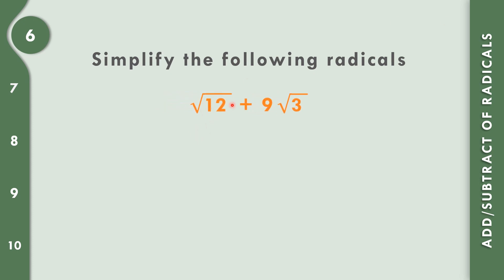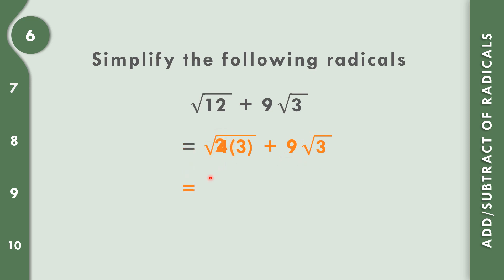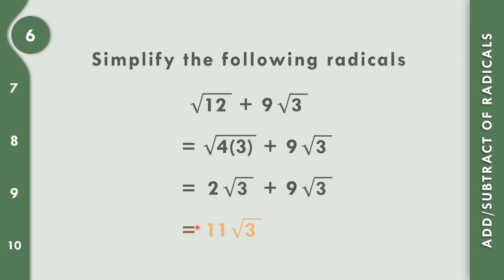In number 6, square root of 12 plus 9 square root of 3. The index is the same, but the radical is not. We need to simplify 12: one factor of 12 is 4 times 3. So square root of 12 equals square root of 4 times square root of 3, which is 2 square root of 3. Now we have 2 square root of 3 plus 9 square root of 3. Same index and radical, so 2 plus 9 equals 11. Final answer: 11 square root of 3.